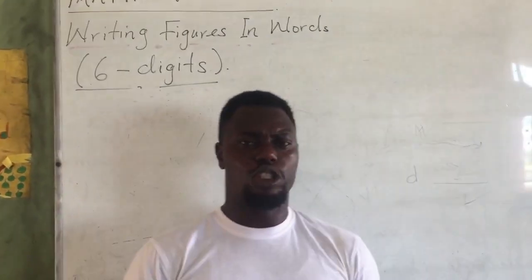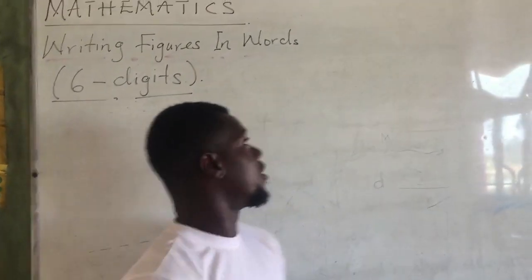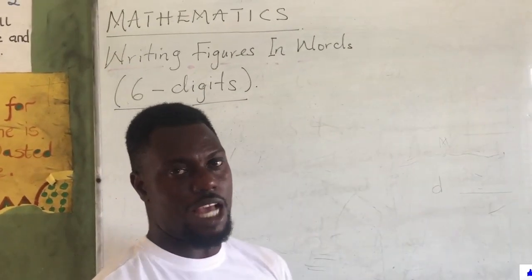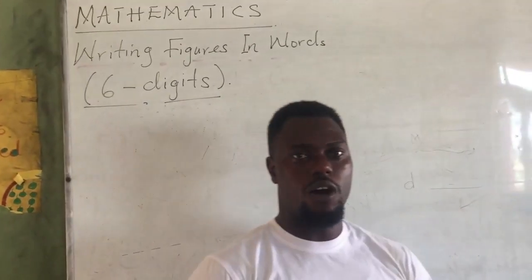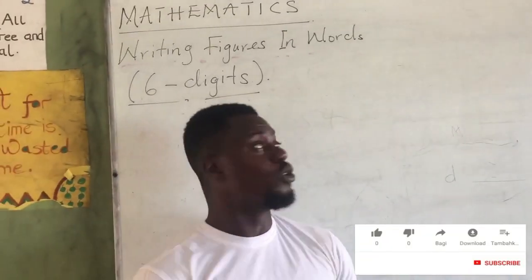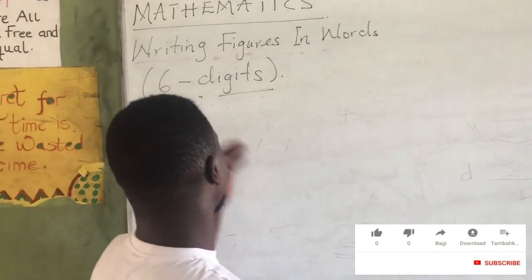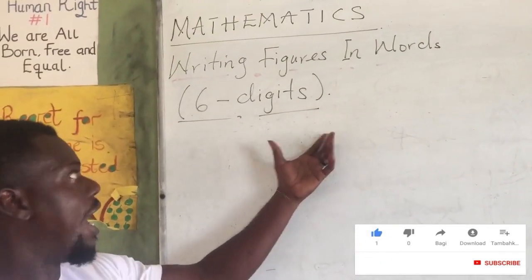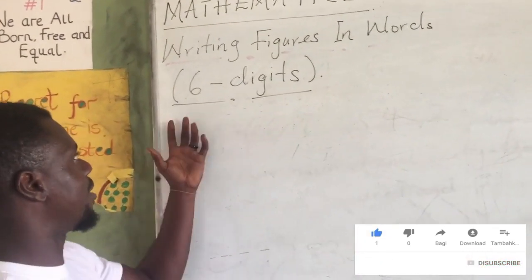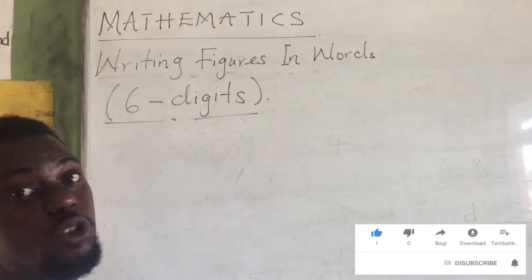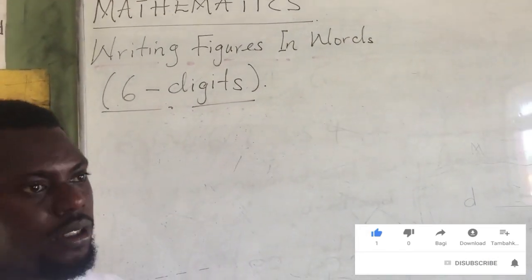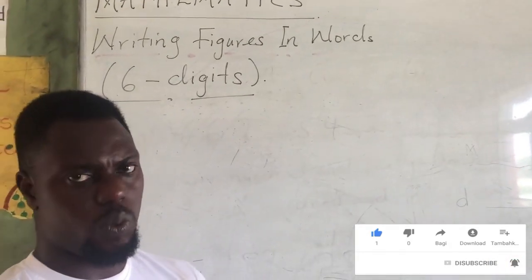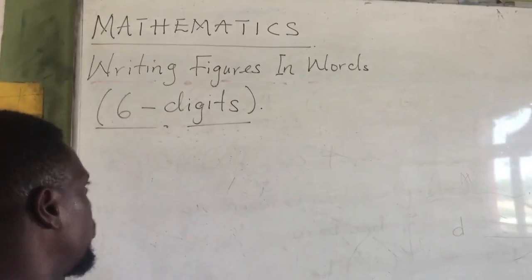Now, we are going to continue with our writing figures in words. As we started with 4 and 5 digits, today we are going to look at 6 digits — how to write 6-digit figures in words. Without wasting time, let me start with an example for you.